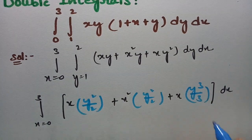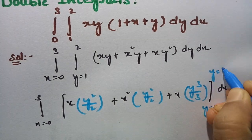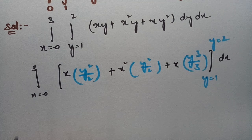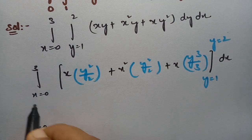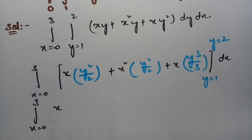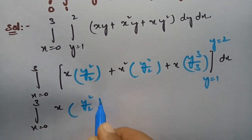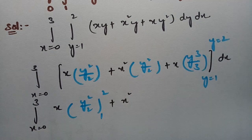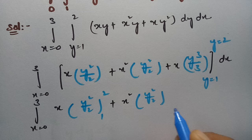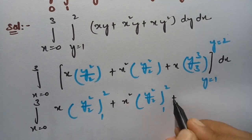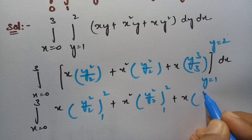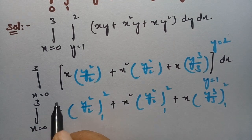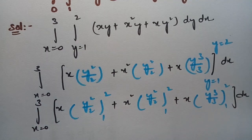The limits are from y = 1 to 2. Now I have to substitute the upper limit minus lower limit. So here x goes from 0 to 3: x times y²/2 between limits 1 to 2, plus x² times y²/2 between limits 1 to 2, plus x times y³/3 between limits 1 to 2, dx.